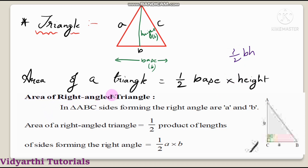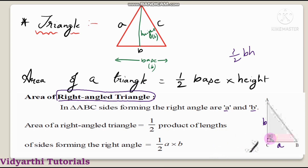Now, what is the area of a right angle triangle? In triangle ABC, the sides forming the right angle are side a and side b. AC is called small b and BC is called small a. These two sides are forming the right angle. So, area of the right angle triangle is equal to half the product of those two lengths, that is ½ × a × b.